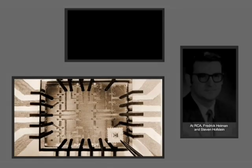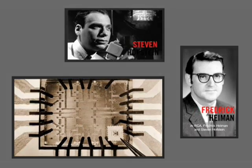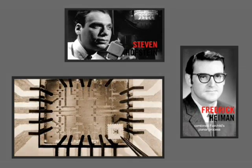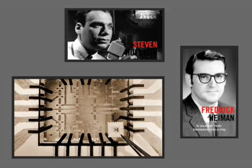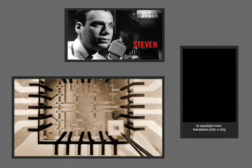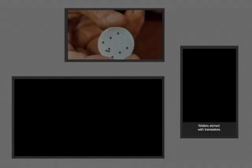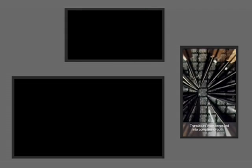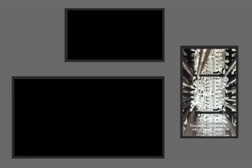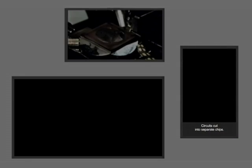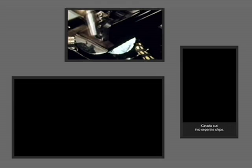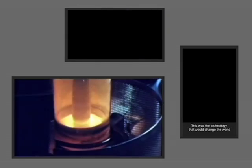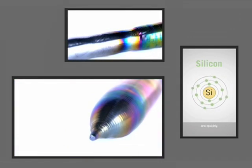At RCA, Frederick Heiman and Stephen Hofstein combined Fairchild's planar process and other innovations to squeeze more transistors onto a chip at lower cost. Silicon ingots sliced into wafers. Wafers etched with transistors. Transistors interconnected into complete circuits. Circuits cut into separate chips. This was the technology that would change the world, and quickly.